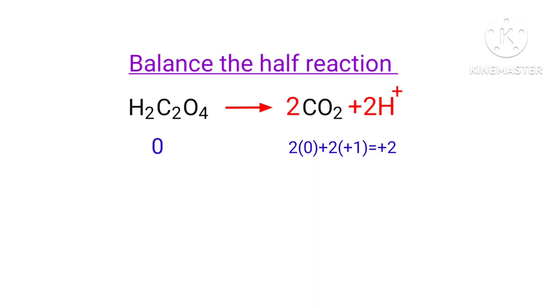To make them equal, you should add electrons as you can't add protons. So if you think of adding two protons to left side to make it equal to plus two, it is wrong. But you can add two electrons to right side to make it equal to zero.